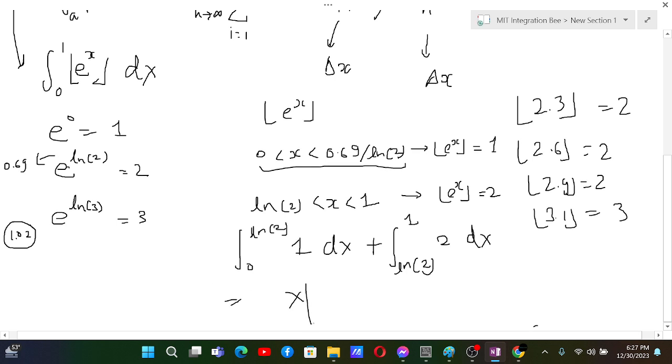Okay, now let's solve this. This is just x from 0 to ln 2, and this is 2x from ln 2 to 1. And then ln 2 minus 0 is ln 2, and this is 2 times 1 minus 2 ln 2, so 2 minus 2 ln 2. So the answer will be 2 minus ln 2. This is the answer.